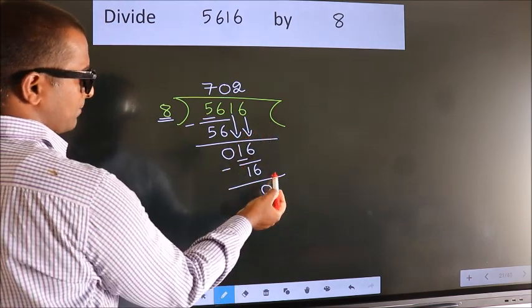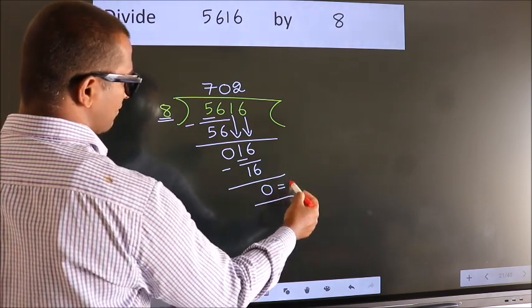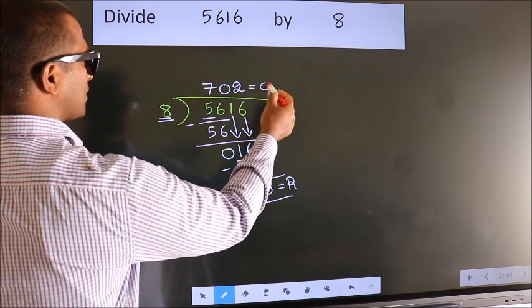No more numbers to bring down. So, we stop here. This is our remainder. This is our quotient.